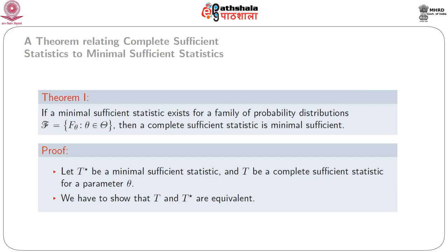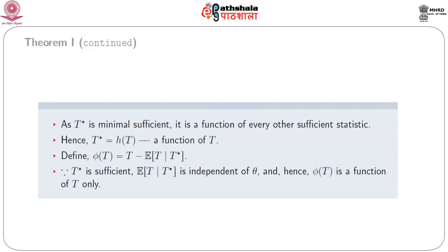We have to show that t and t* are equivalent. As t* is minimal sufficient, it is a function of every other sufficient statistic. Hence t* = h(t) is a function of t. Now we define φ(t) = t − E(t | t*). Since t* is sufficient, E(t | t*) is independent of θ, and hence φ(t) is a function of t only.